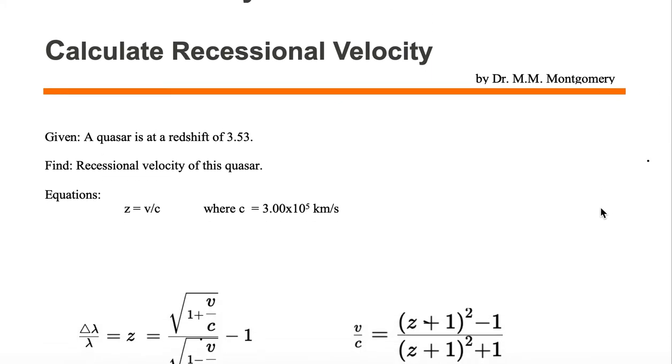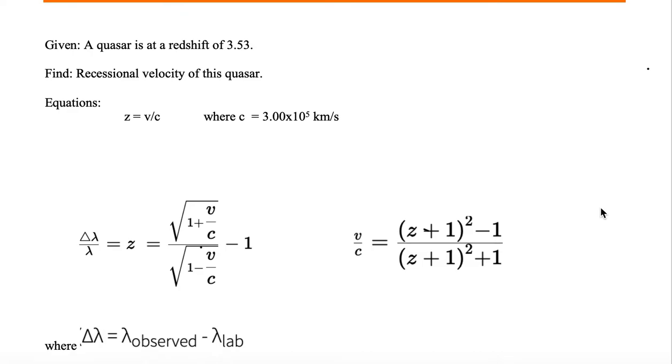So we're given a bunch of equations. Let's look at a few of them. We're given z is equal to v over c, where c is, in this case, 3.00 times 10 to the fifth kilometers per second.